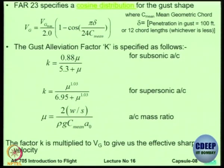There is a gust alleviation factor k which takes care of the fact that gusts are not very sharp, they are smooth. It reduces the numerical value, it reduces the numerical value of the gust that has to be calculated.